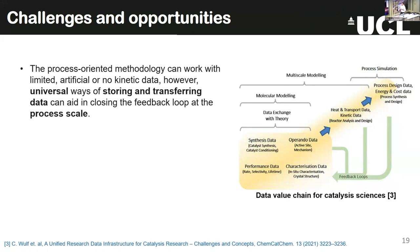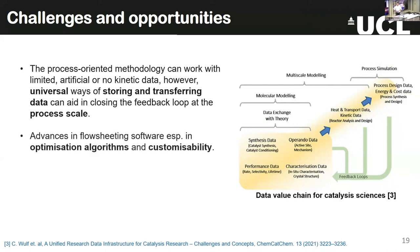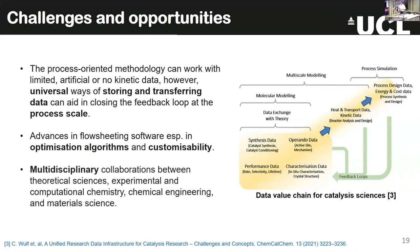This process-oriented methodology can work with limited, artificial, or non-kinetic data. However, we need universal ways of storing and indexing and transferring data, because it would aid in closing this feedback loop at process scale. On the systems engineering side, we also need advances in flowsheet simulation software, better optimization algorithms, and better customizability. This will only be possible with multidisciplinary collaborations between theoretical scientists, experimental and computational chemists, computer engineers, data scientists, and chemical engineers.